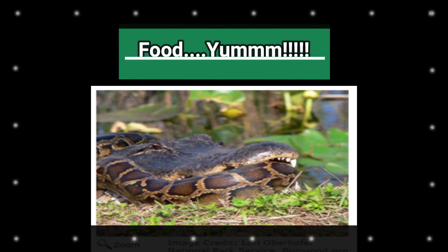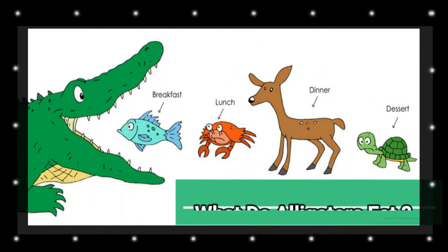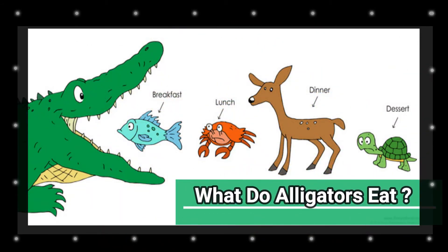Diet: The American alligator is a carnivore. It eats mostly fish, turtles, snakes, small mammals, and carrion. Carrion is already dead matter, like rotting deer or other decomposing animals. It does most of its hunting in the water.